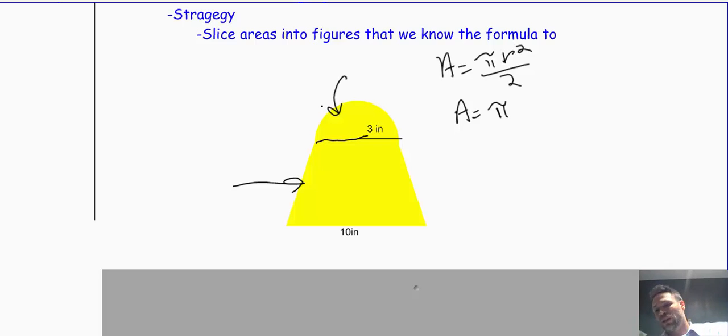3 squared is 9. So that's 9π over 2, or I can simplify that to 4.5π. That's the area of the hemisphere.